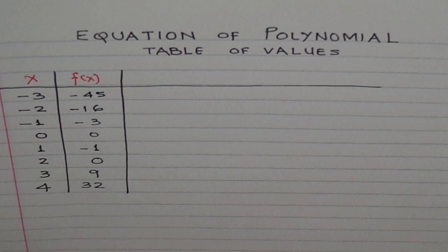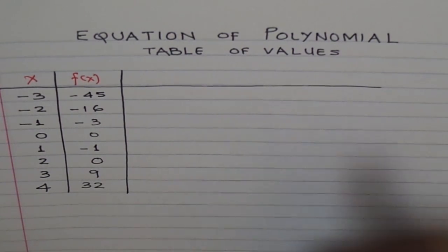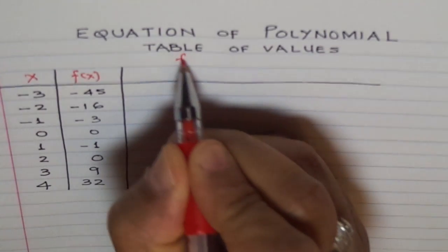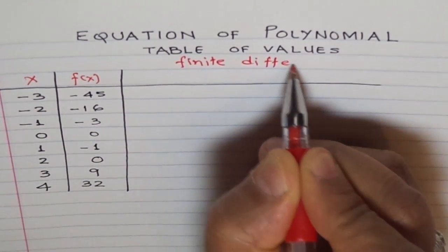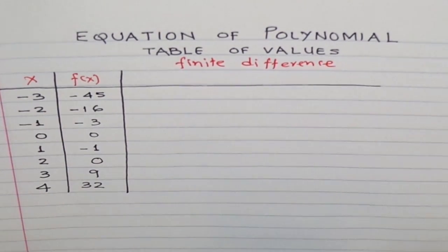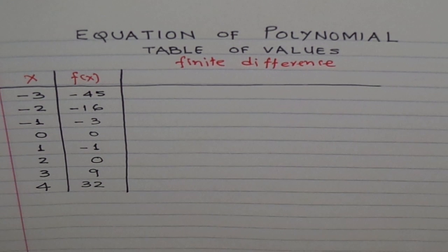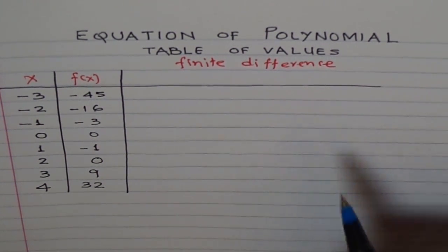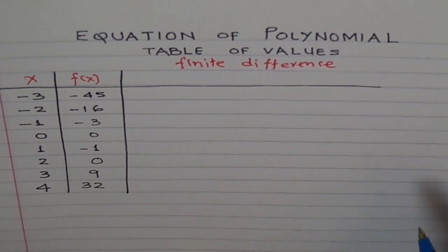First objective is to find the degree of the polynomial. How to do that? Well, we will find finite differences. You remember finite differences? Finite differences is a process of finding y2 minus y1, right? If we continue this process, there will be a time when the finite difference will be constant. For that particular time, we can find the equation of the polynomial.